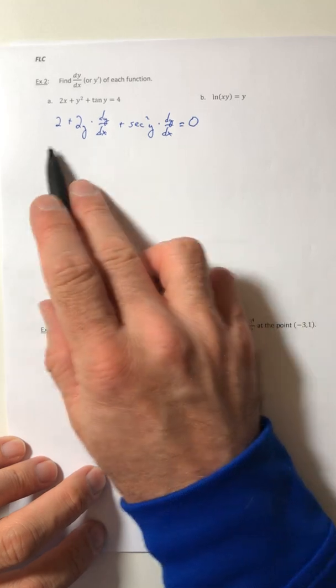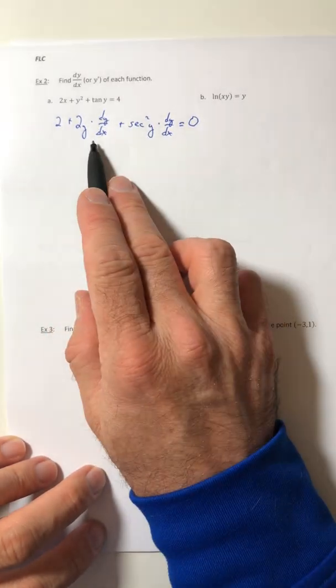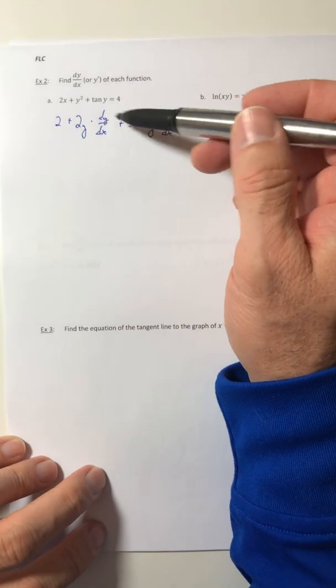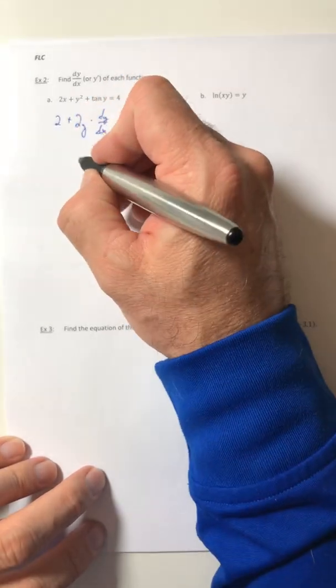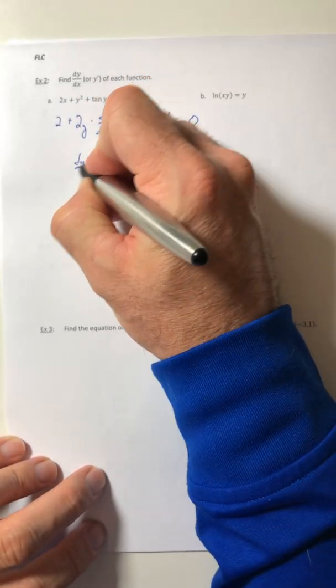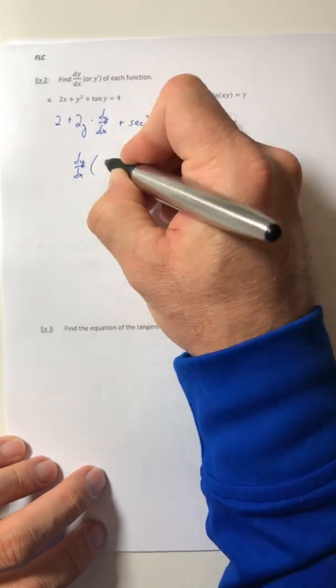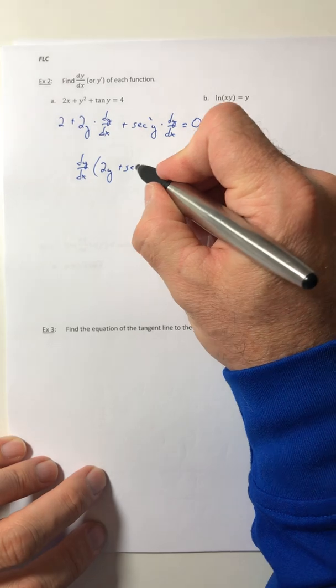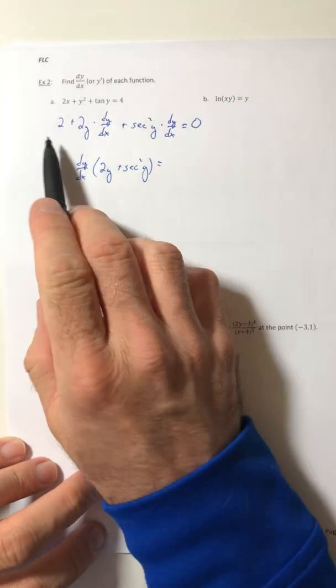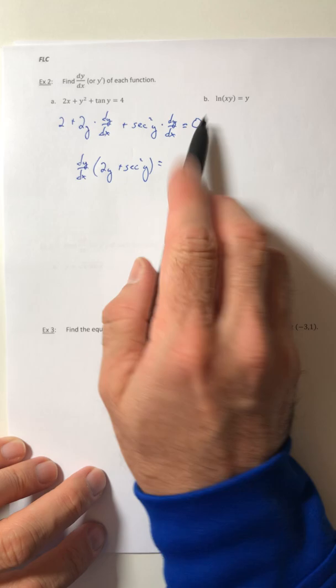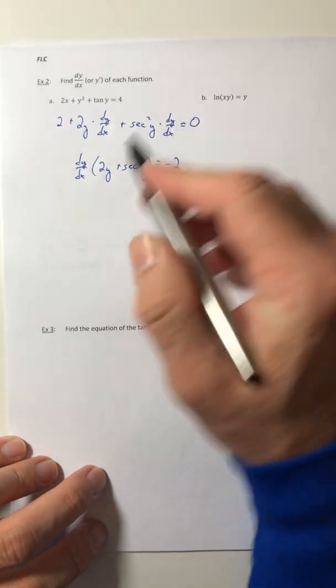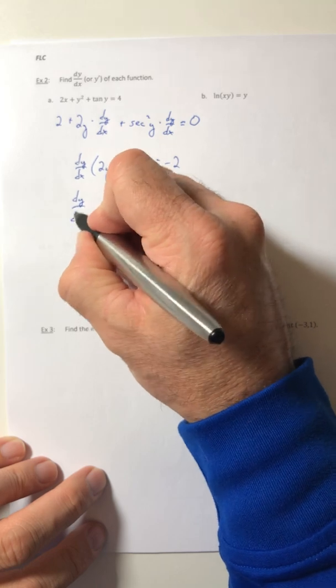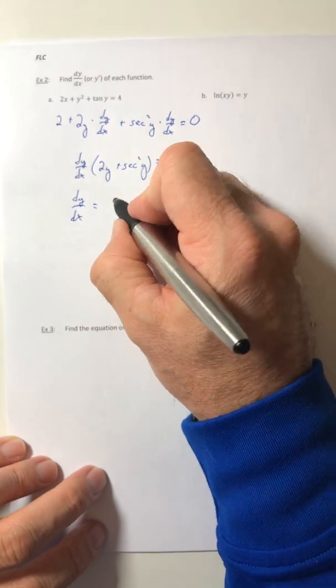And then the derivative of 4 is just 0. Okay, so now I have my derivative out, now I just need to solve for dy/dx. So just like I did in the last example, we're going to pull the dy/dx out of 2y plus secant squared. And then I'm also going to move this 2 all the way over to the right. And now I can just divide and get the dy/dx by itself, and we are done.